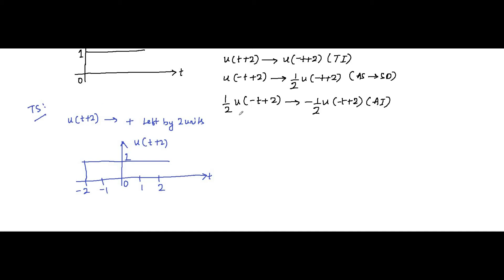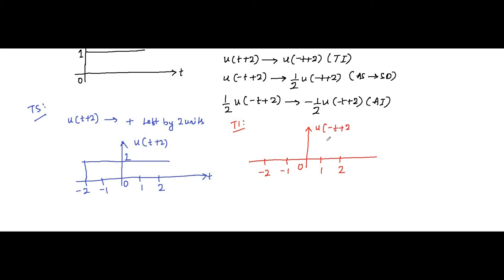Then we have to perform time inversion. What we do is form a mirror image of the time-shifted signal around the y-axis. Suppose we place a mirror along the y-axis — the mirror image we obtain is the time-reversed signal. It will look like this: here it is 1, here 2, this is 0, this is -1, this is -2. This is u(-t+2), starting from here with amplitude 1. Time inversion is done.